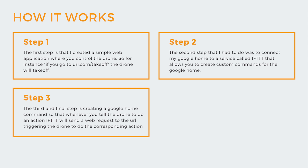The second step was connecting a service called IFTTT — which stands for 'If This Then That' — to my Google Home. This allows me to create custom commands for my Google Home, which I then used to control the drone. The third step is creating a Google Home command so that whenever you tell the drone to do an action through Google Home, IFTTT sends a web request to the URL, triggering the drone to do the corresponding action.